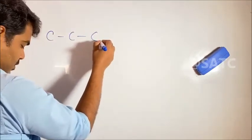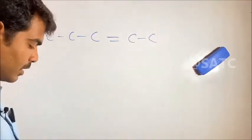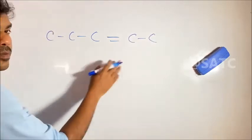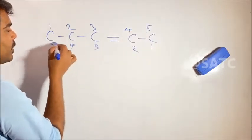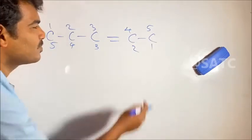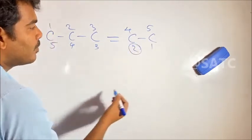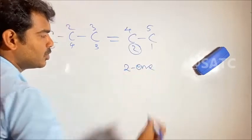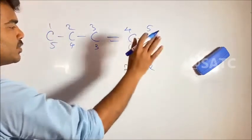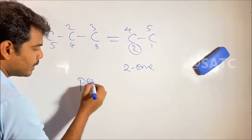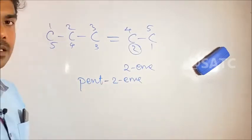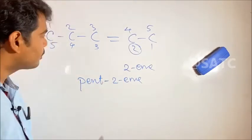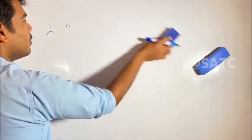Next example: here we have five carbons — 1, 2, 3, 4, 5. The double bond is at position 2. The suffix is '2-ene', and for five carbons we use 'pent-'. So the name is pent-2-ene. That covers double bonds — now what about triple bonds?